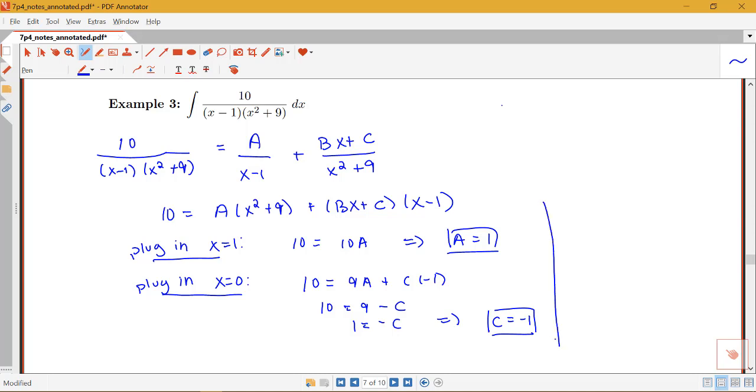Okay so I'm just going to use some other space here on the page. So I can go ahead and plug in just another small number. I'll choose to plug in x=-1. You've got to do three different values of x to solve for my three unknowns. So I'll have 10 = A(-1)²+9, so that'll end up being 10A plus (-B+C)(-2).